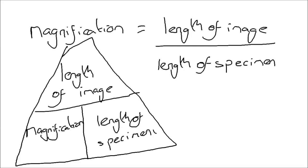I recommend you write it out properly — magnification equals length of image over length of specimen — to make it super clear to the examiner that you know what you're trying to work out. In most exam questions you'll either have to measure the length of the image or you'll be given the length of the specimen and asked to calculate the magnification, or given two of those things and asked to work out the other. Once you know this formula, it's easy and quick marks.